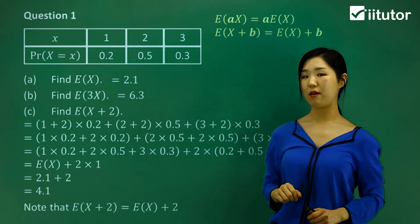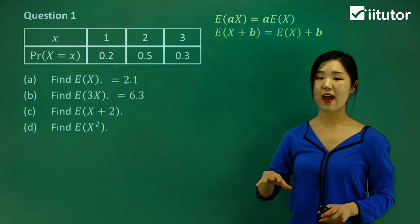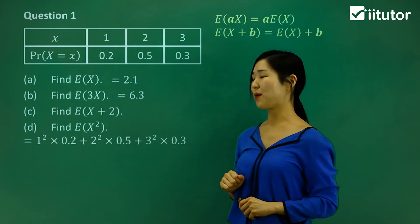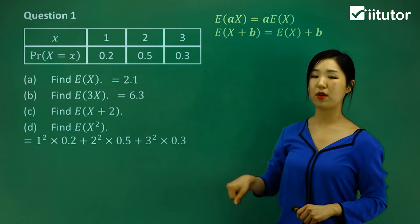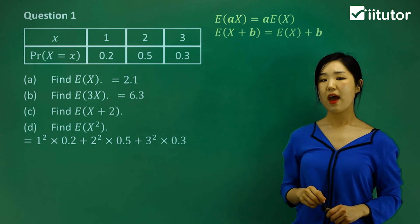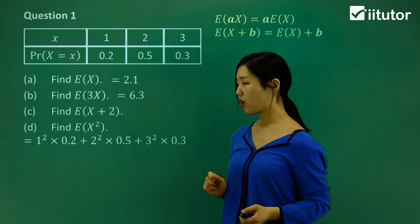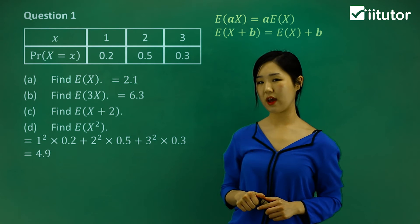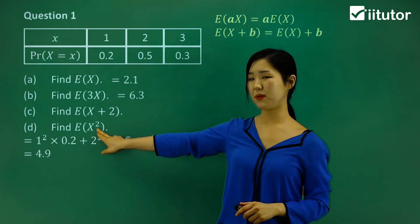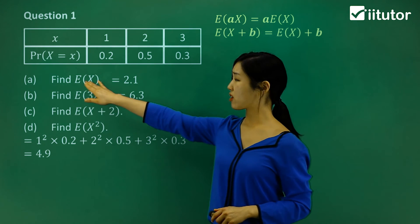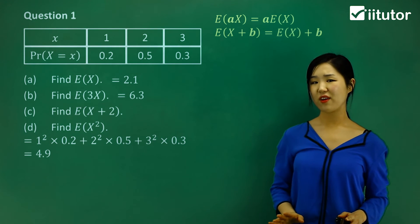Let's do part D, which asks us to calculate the expected value of x squared. We square each variable and keep the same procedure: 1 squared times 0.2, plus 2 squared times 0.5, plus 3 squared times 0.3. This time I can't really do any expansions or factorizations because I don't see anything common, so I'll just multiply and add them all up. It comes to 4.9. I was hoping to find a relationship with the original expectation of 2.1, but squaring 2.1 does not give 4.9.